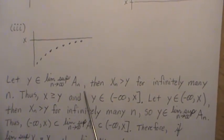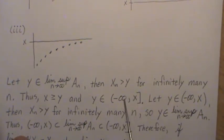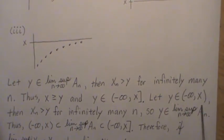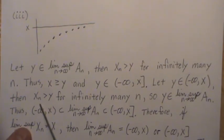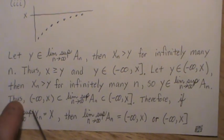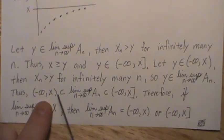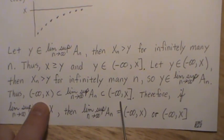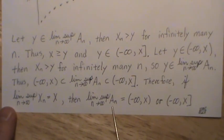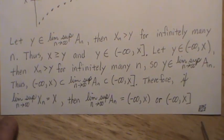So we've shown that the limit supremum of Aₙ is a subset of (-∞, x]. For the other direction, let y be in (-∞, x), the open interval. Then y < xₙ for infinitely many n, so y is in the limit supremum of Aₙ. This shows (-∞, x) ⊆ limsup(Aₙ). Combining both directions, if the limit supremum of xₙ equals x, then the limit supremum of Aₙ is either (-∞, x) or (-∞, x], and that's what we wanted to show.